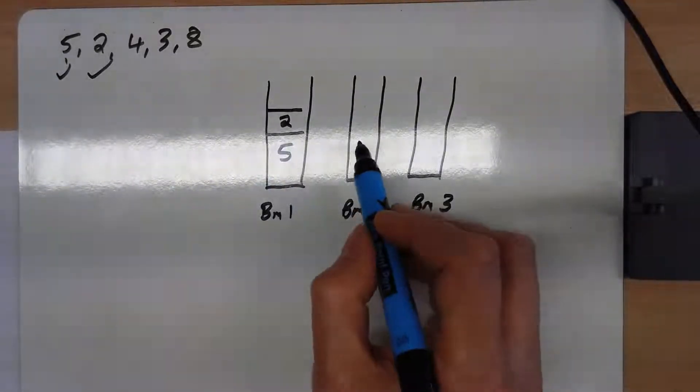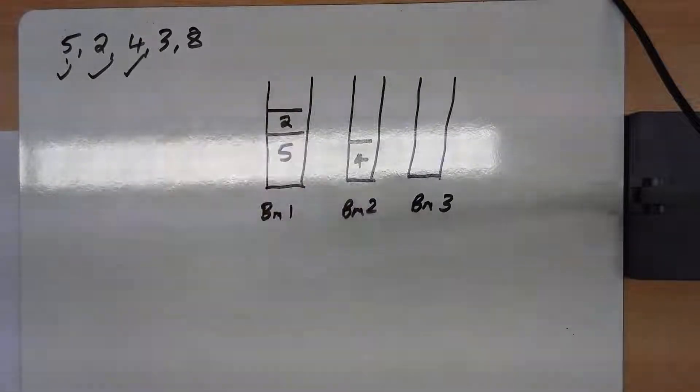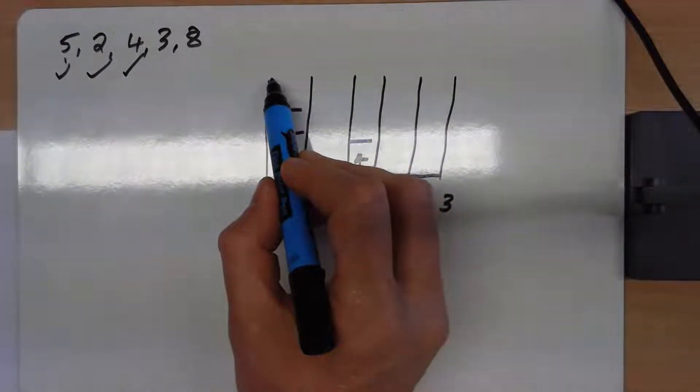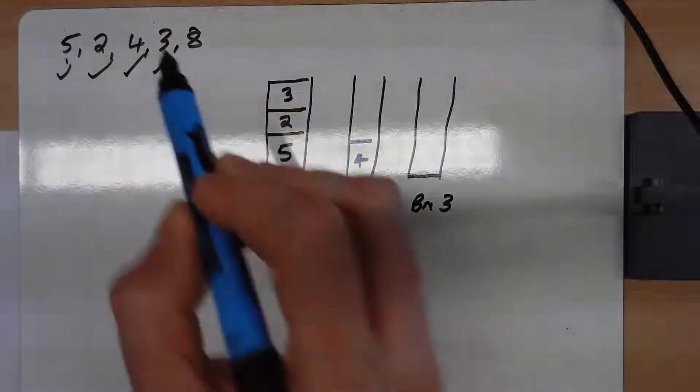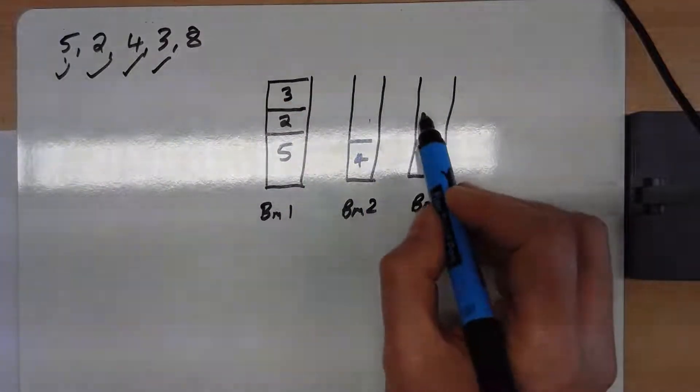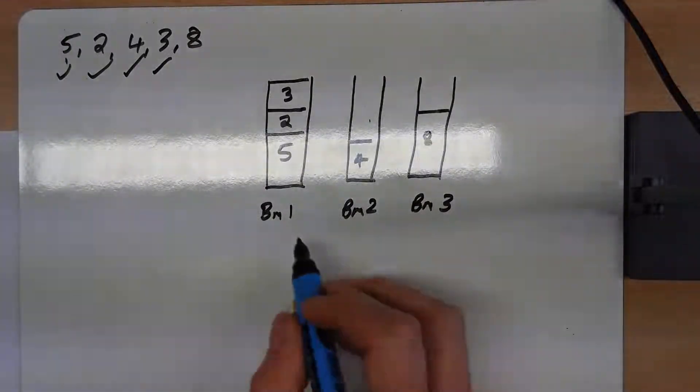The 4 doesn't fit in bin 1, so you put that in the next one. But the 3 does fit in bin 1, so we'll put it there. The 8 won't fit in bins 1 or 2, so it'll have to have its own bin. And there's our answer.